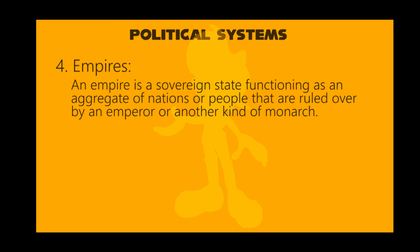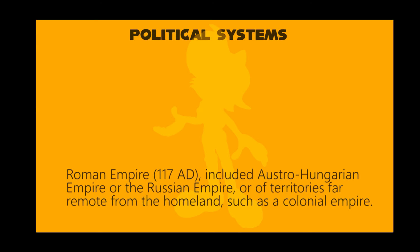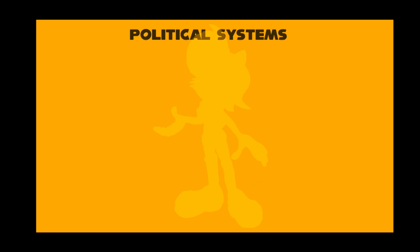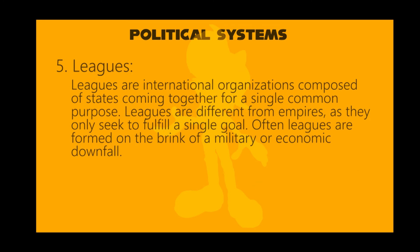In 117 A.D., the territory and population of an empire is commonly of greater extent than that of a kingdom, such as the Austro-Hungarian Empire or the Russian Empire, or of territories far remote from the homeland, such as a colonial empire.